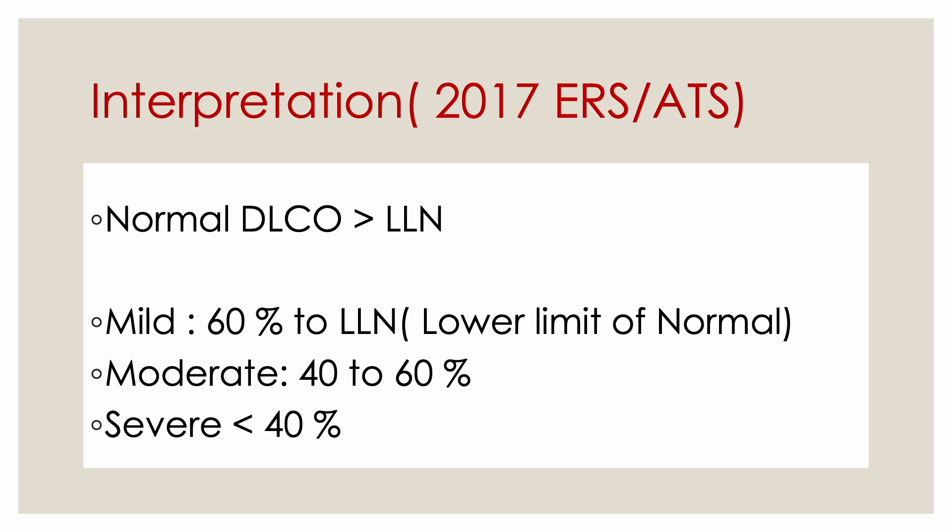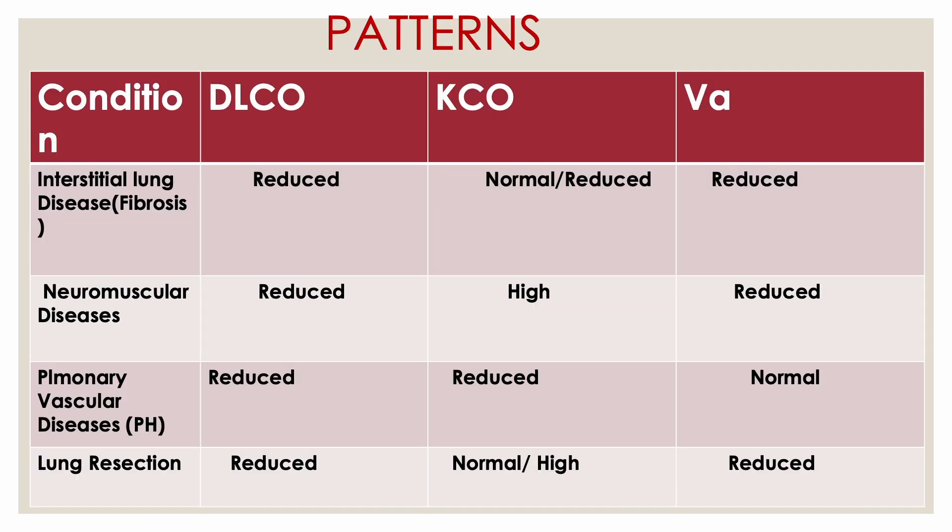For interpretation: a normal DLCO is above the lower limit of normal. A mildly reduced DLCO is 60% to the lower limit of normal. Moderate reduction is 40–60%, and severe is less than 40%. In ILD with lung fibrosis, DLCO is reduced because alveolar volume decreases and so does the diffusion factor — sometimes KCO is slightly reduced, or early on it may be normal, but alveolar volume decreases due to alveolitis. In neuromuscular disease, DLCO also reduces, but here the low alveolar volume is due to lack of alveolar expansion.